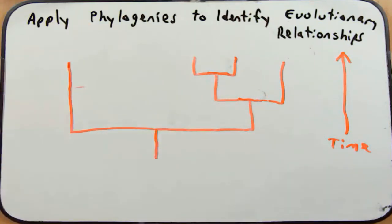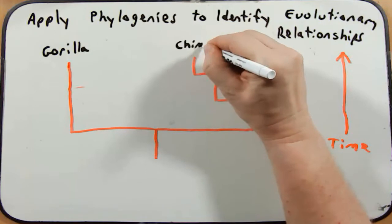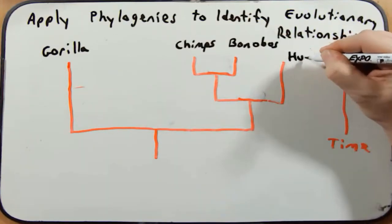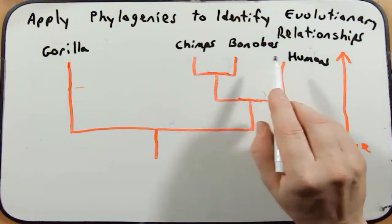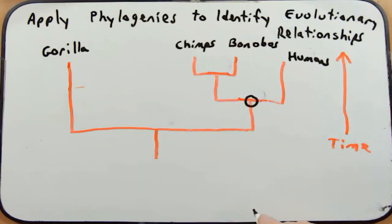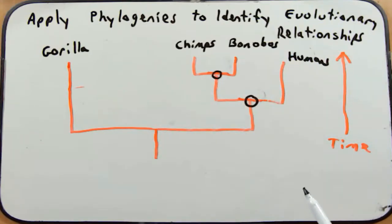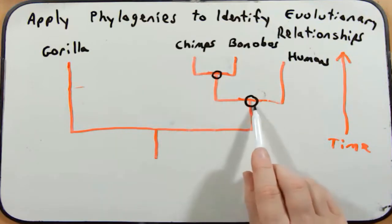Let's put familiar names on the tree: gorilla, chimpanzees, bonobos, and humans. You often see the misconception showing chimpanzees slowly evolving into a human — that is completely wrong. A better description: humans, chimpanzees, and bonobos share a common ancestor. Using what we've discussed, chimps and bonobos have a common ancestor and are more closely related to each other than to a human. We wouldn't say chimps or bonobos are more like humans — we would say they both share a common ancestor at this node.